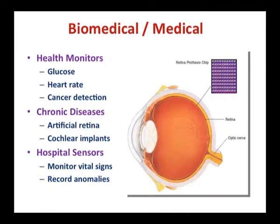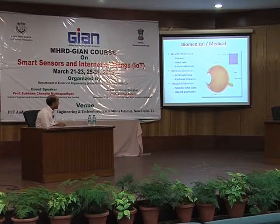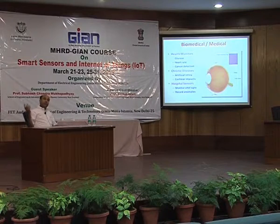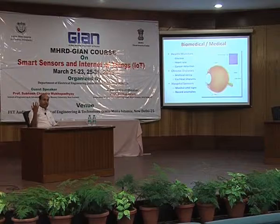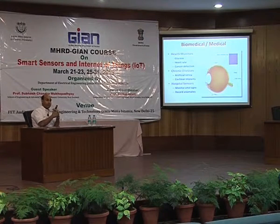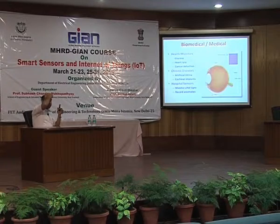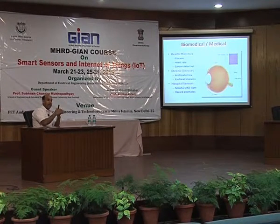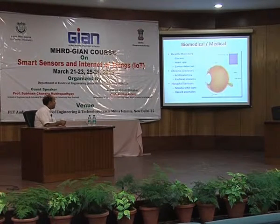There are also biological and medical applications — monitoring applications where even blind people can see through different sensing technologies, still in the trial stage. There are various applications coming up: implants and artificial retinas. In hospitals, wireless sensors are becoming very useful for patient monitoring — it can be very handy. Otherwise, nurses have to go to each patient individually, and sometimes something happens and they do not arrive at the right time. Wireless sensor network-based monitoring can be very useful for hospital applications.